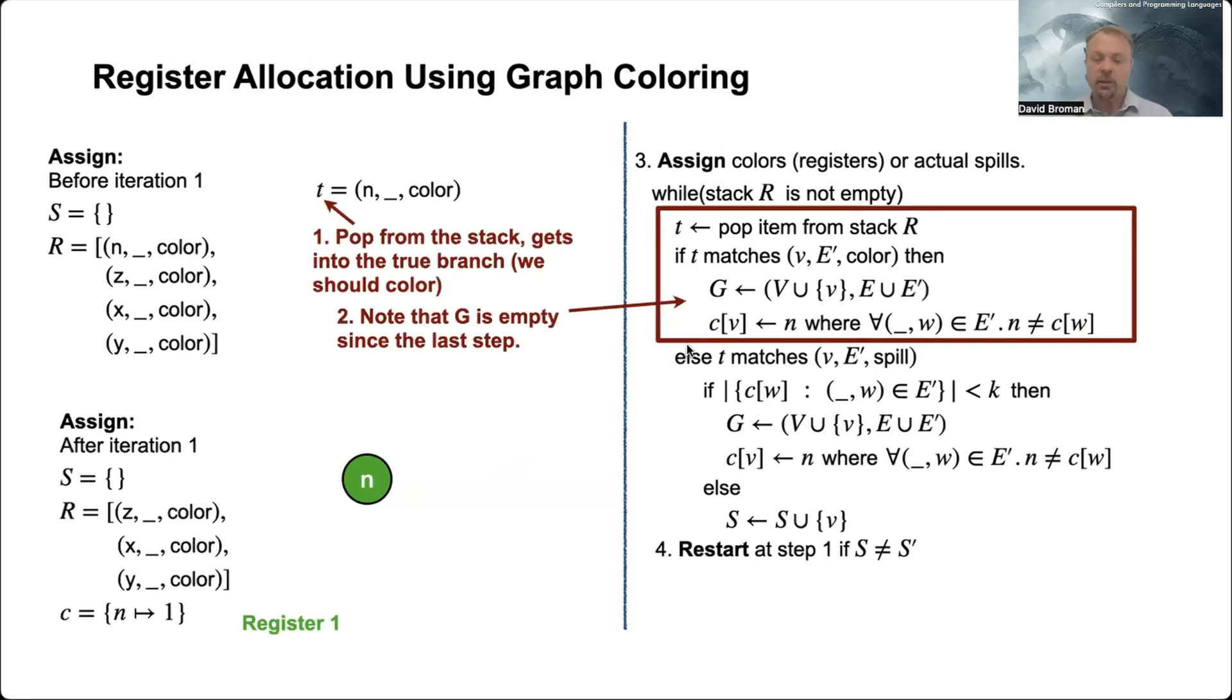The next thing is that we want to assign a color to this, so we want to give it an actual register. So we have used this c here stating which color we have. So I pointed out here with the color. So this is green in this case.